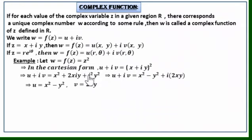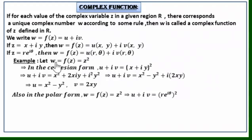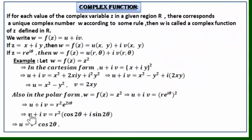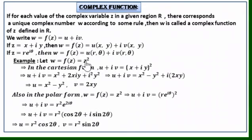In polar form, taking z = r·e^(iθ) in f(z) = z²: u + iv = (r·e^(iθ))² = r²·e^(2iθ). By Euler's formula, e^(2iθ) = cos 2θ + i·sin 2θ, so u + iv = r²(cos 2θ + i·sin 2θ). Equating parts: u = r²·cos 2θ and v = r²·sin 2θ. So u and v are functions of r and θ.